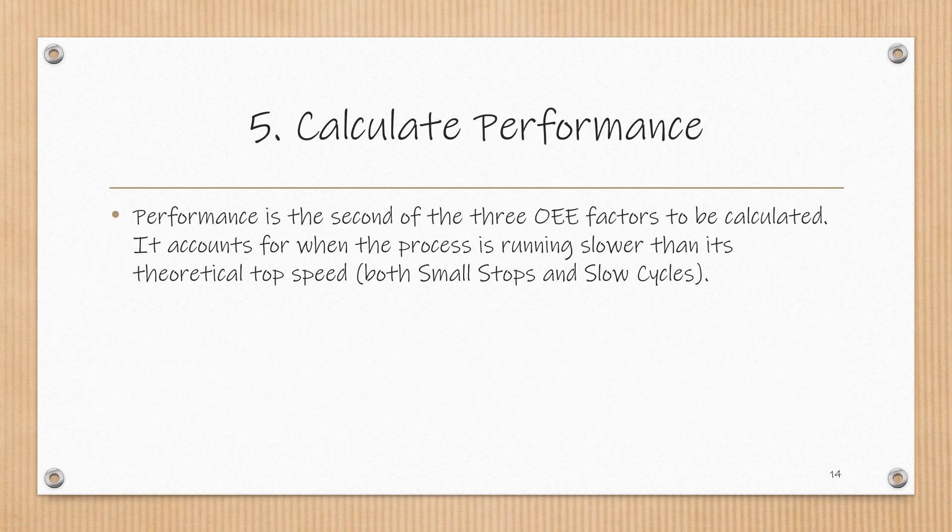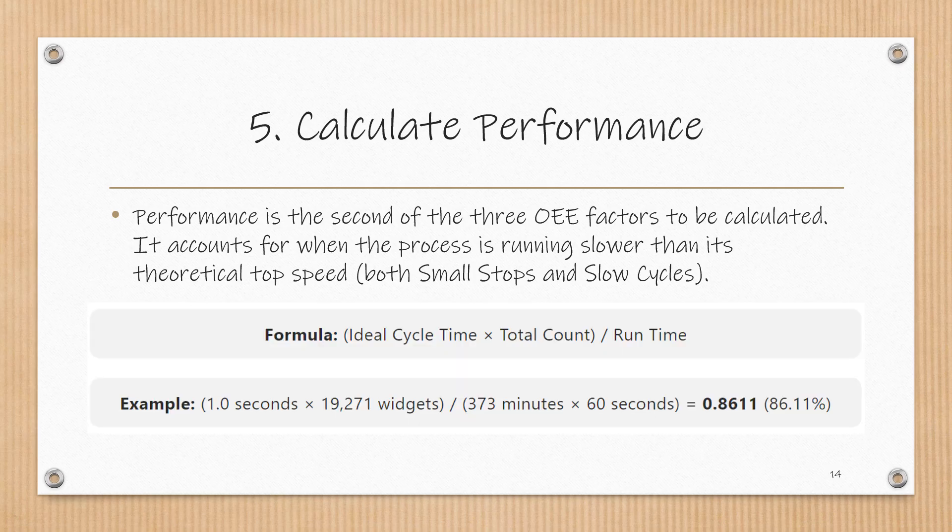Performance is the second of the three OEE factors to be calculated. It accounts for when the process is running slower than its theoretical top speed, including both small stops and slow cycles. The formula is: (ideal cycle time × total count) divided by runtime. In our example, the ideal cycle time is one second, the total count was 19,271 units divided by a runtime of 373 minutes converted to seconds, resulting in a performance value of 86.11%.